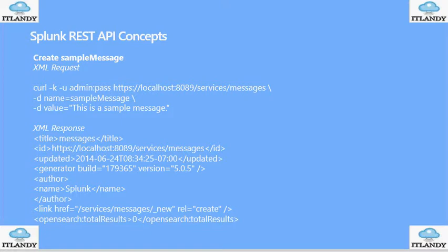Now, creating a sample message is to do the request and then you can browse to the messages themselves — which means the localhost, port, services — and then the response will contain title, ID, updating, and author. Again, it's XML-page based.